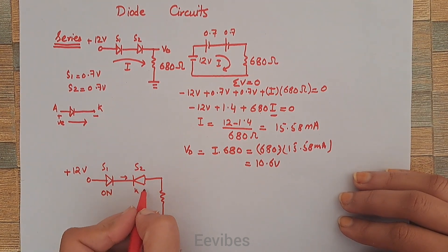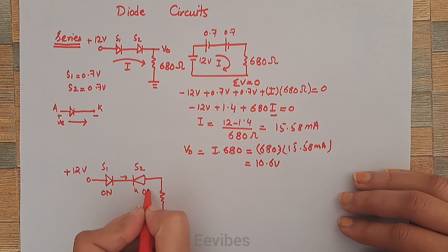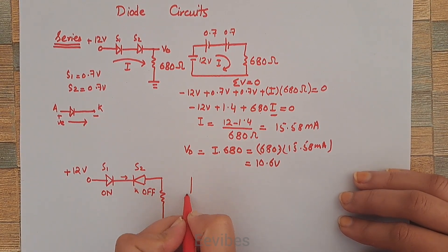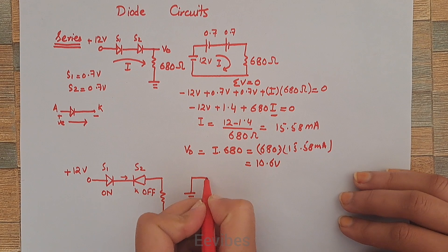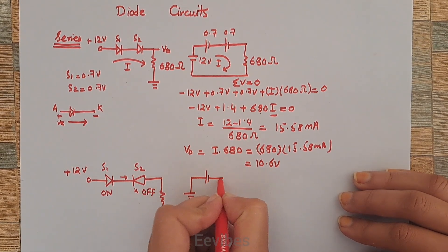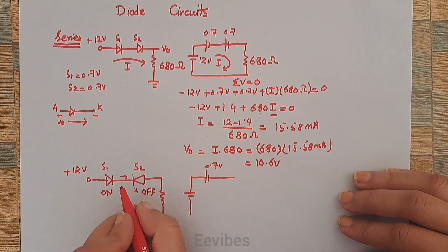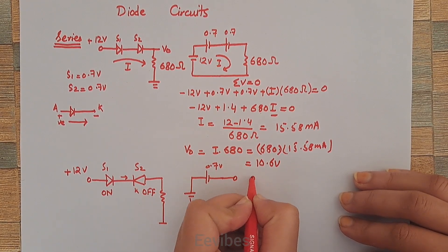If you draw the equivalent circuit at this point, you can simply replace the first diode with +0.7V potential, while the next diode is off so it can be replaced with an open circuit.